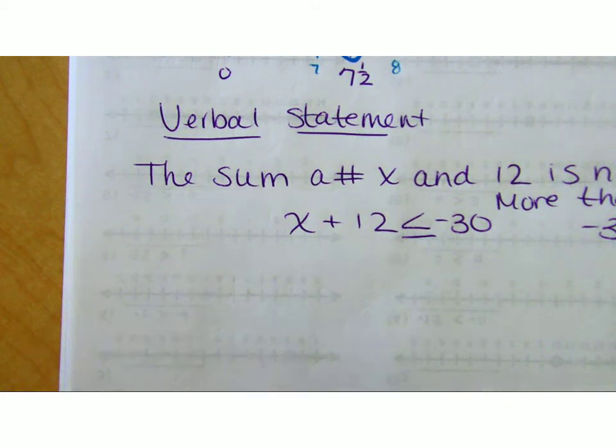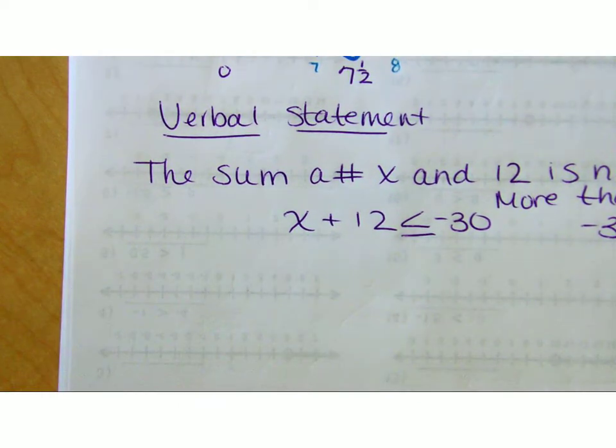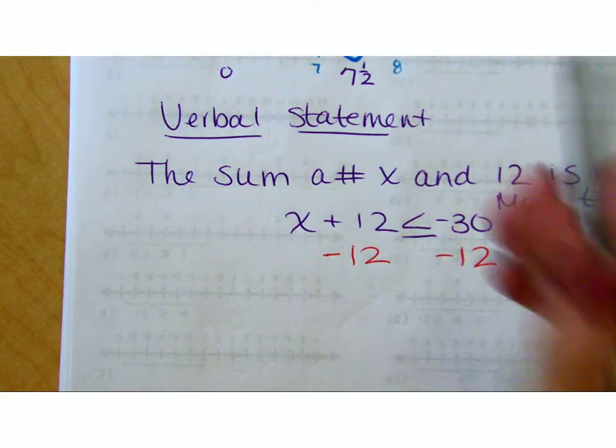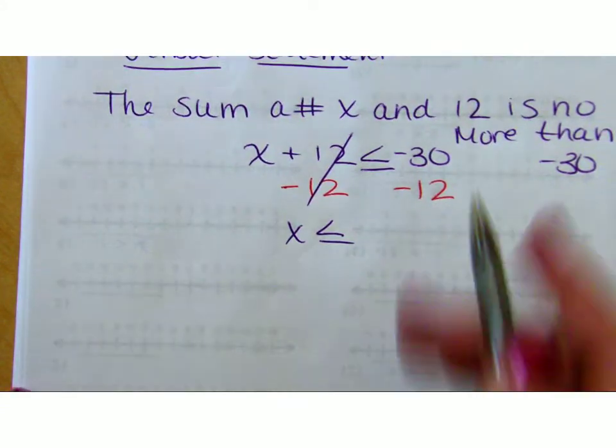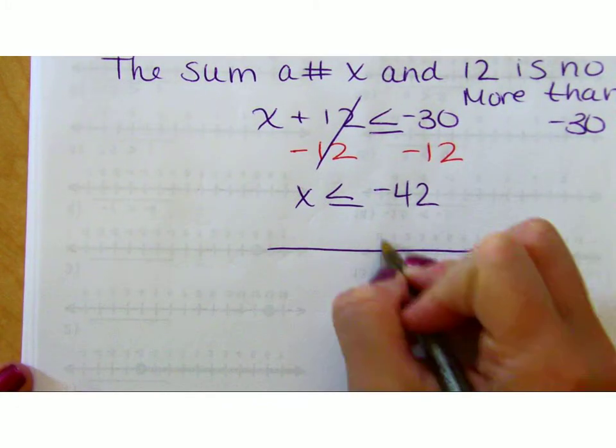So this was test 1. This was test 2. And in test 2 you should have set it up. I didn't make you solve it. Test 5, now solve it. So I'm going to subtract 12, subtract 12. So the x solutions can be any number less than or equal to negative 42. And then you know the drill from there. The number just to the right of this is negative 41. Has to be less than or equal to.